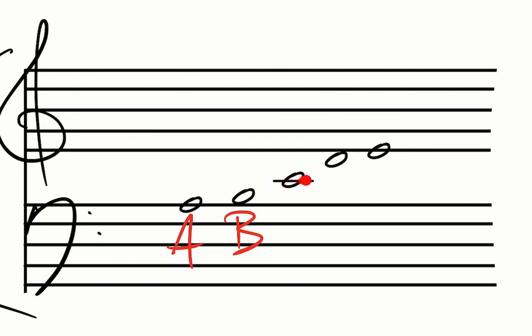So we draw this line right here through that note to indicate that it is a line above a space above the staff. We know that the next note in the alphabet is C. So it's a C.